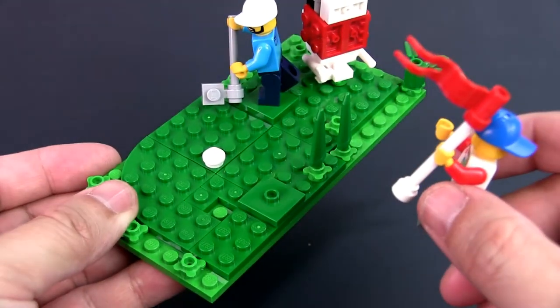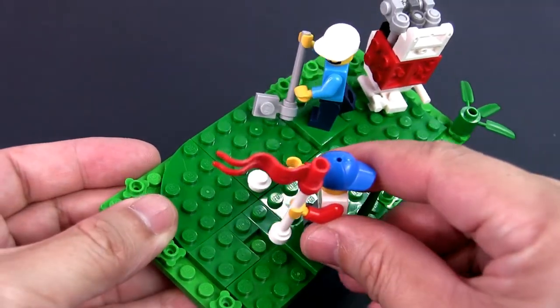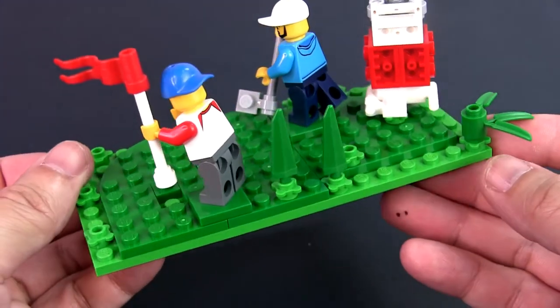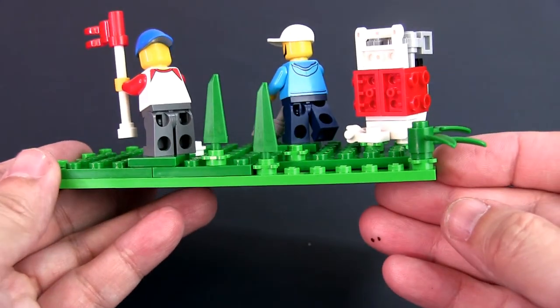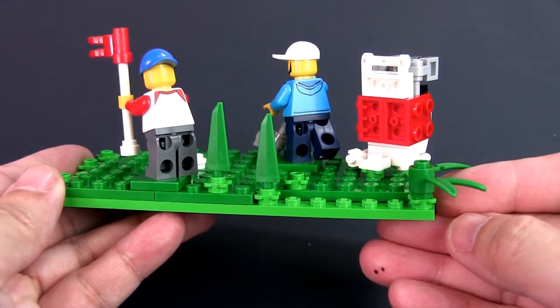I staged two minifigs, one golfer and a caddy who's currently lifting up the flag from the hole. The minifigs are placed on jumper plates so that they can be placed at angles to make the display more interesting.